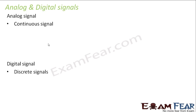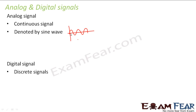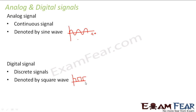A digital signal, on the other hand, consists of discrete signals — they are not continuous. If they are high, they remain high for a certain period, then suddenly become low, then high again. Analog signals are denoted by a sine wave, which illustrates their continuity, with amplitude changing continuously over time. Digital signals are generally denoted by a square wave — either high or low, with no continuity.